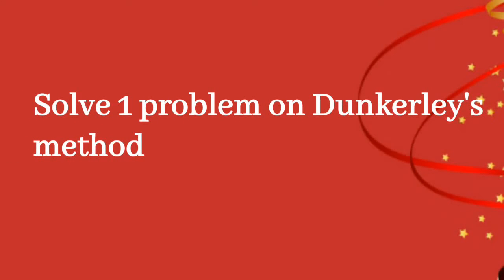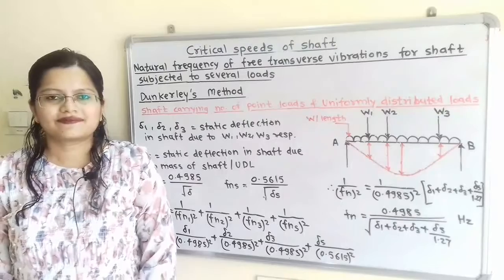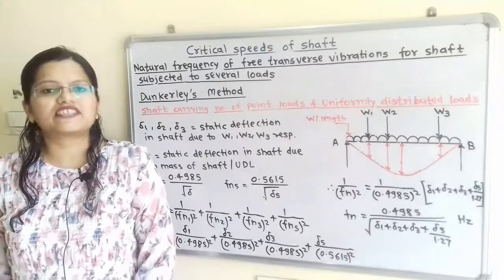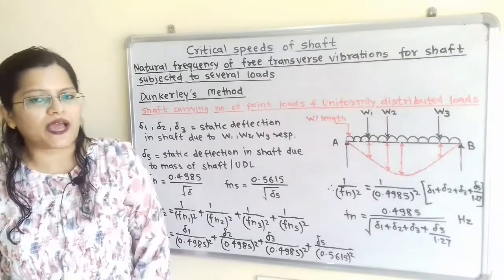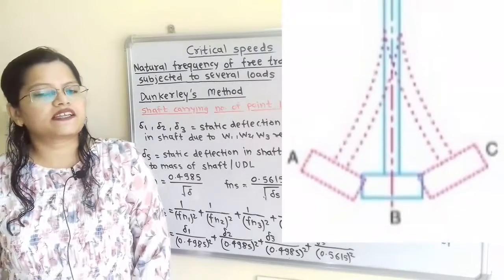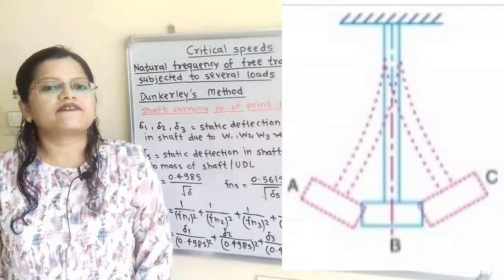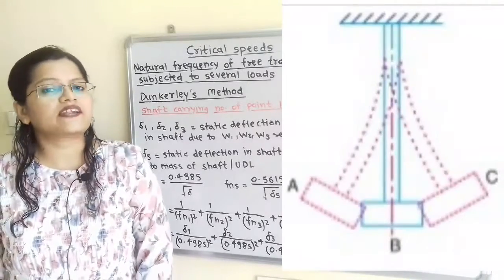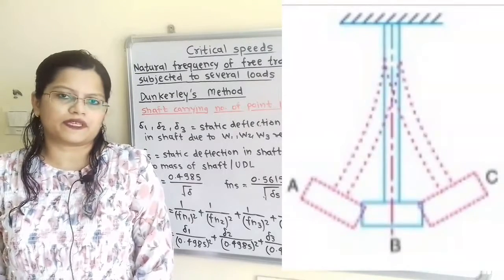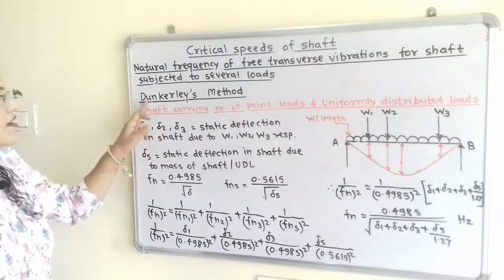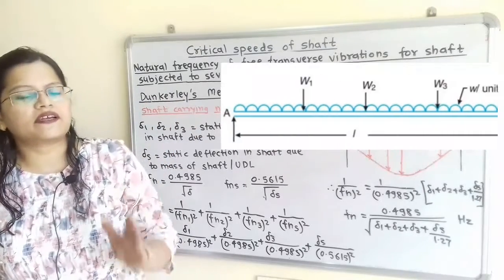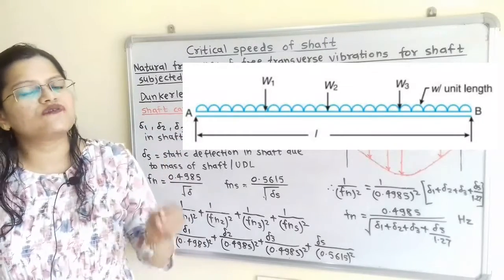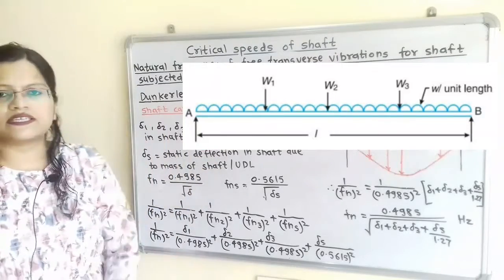We will solve a problem on Dunkerley's method. Let us first find out the formula to calculate the natural frequency of free transverse vibration for a shaft subjected to several loads. When the shaft or rotor vibrates perpendicular to the axis of rotation, that vibration is known as transverse vibration. Dunkerley's method is applicable when the shaft carries a number of point loads as well as uniformly distributed loads.